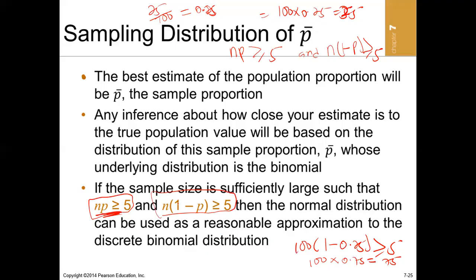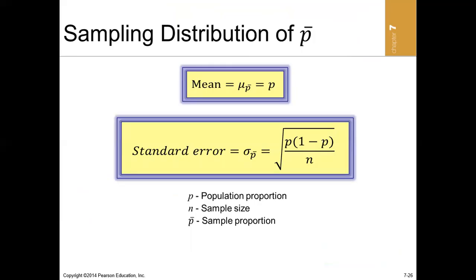If the sampling distribution has a large sample size, it means that the sample proportion will be a best estimate of the population proportion. In other words, the mean of all sample proportions should be approximately equal to the population proportion — similar to how the mean of all sample means equals the population mean.